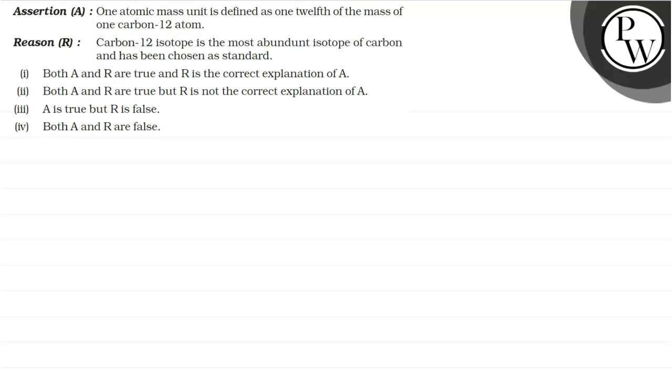Hello, let's read the question. The assertion states one atomic mass unit is defined as one-twelfth of the mass of one carbon-12 atom. The reason given is carbon-12 isotope is the most abundant isotope of carbon and has been chosen as standard.